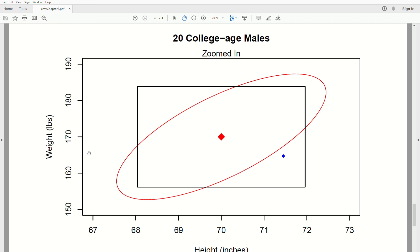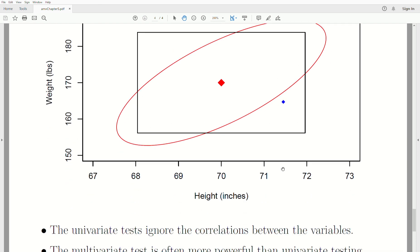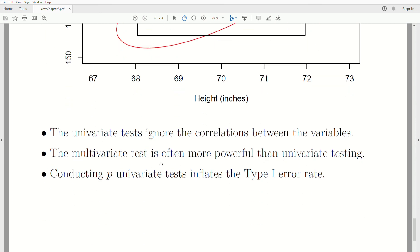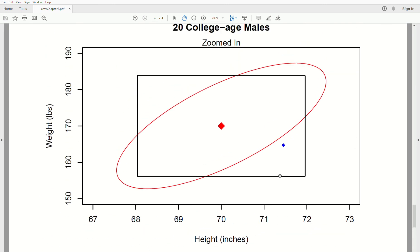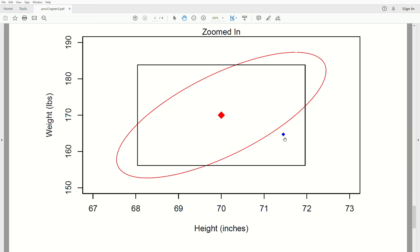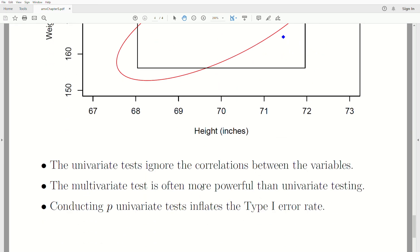So if we do two univariate tests, there's not enough evidence to say that the mean is not 70 in height and not 170 in weight. But when we do the multivariate test, we reject. And the big reason is the univariate tests ignore the correlations between the variables. So if we do two univariate tests, we're not using all the information available. We don't know the correlation between the two values. So it's not as powerful.